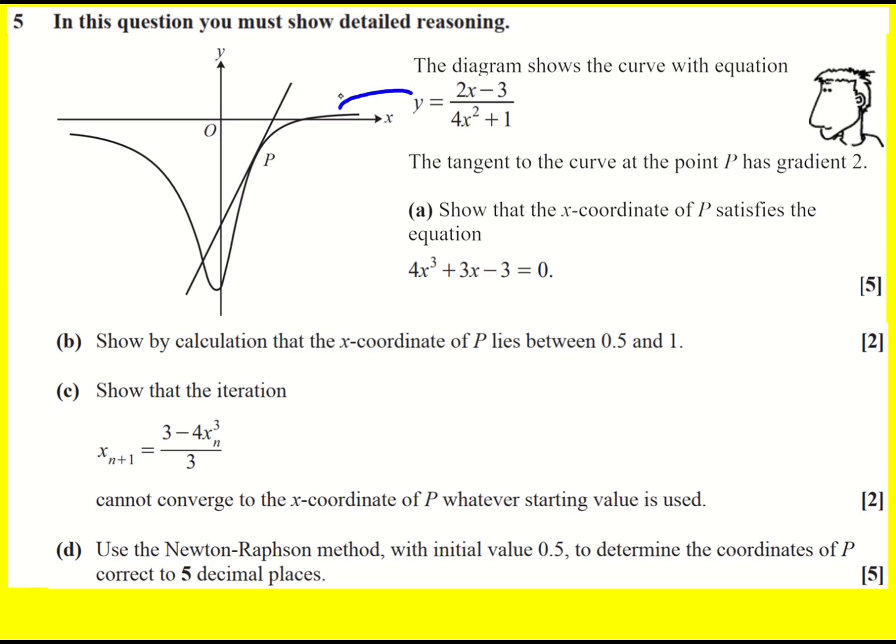We have a curve shown by this line here, and then a tangent at a point P, which is given here. P is here, and we're told that the tangent has gradient 2. We're asked to show that the x-coordinate of P satisfies this equation.